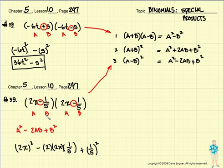Let me do that one more time. The A term is 2X. The B term is 1 fifth. We're going to use formula number three.